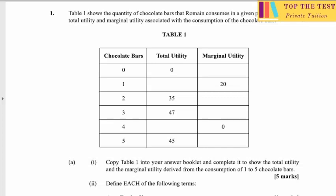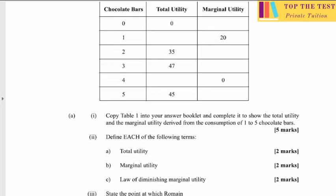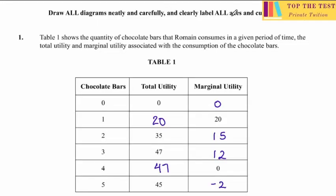Part 1 is asking us to complete the table to show the different total utility and marginal utility values derived from the consumption of 1 to 5 chocolate bars. I'll go through how we would have gotten the values presented here.